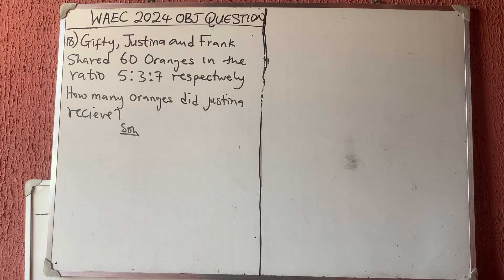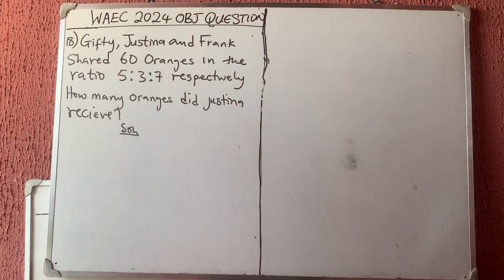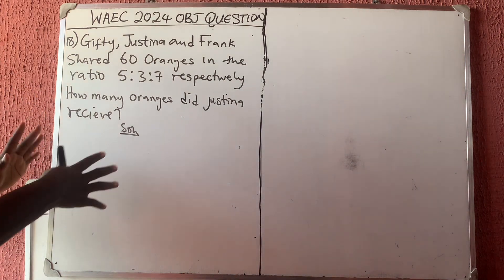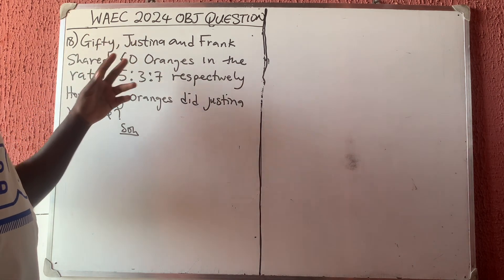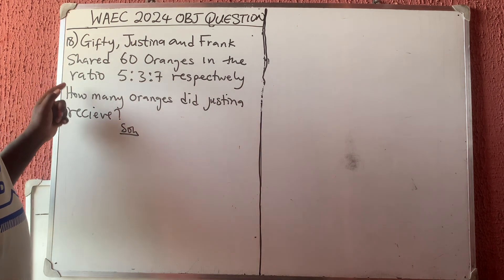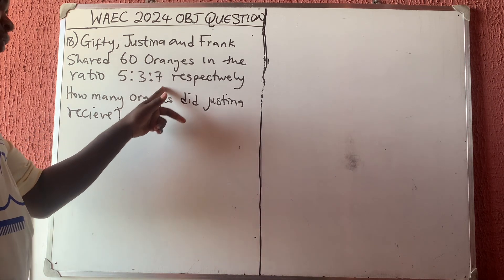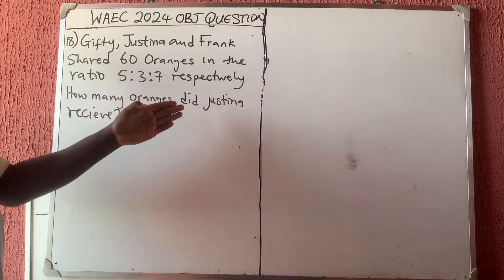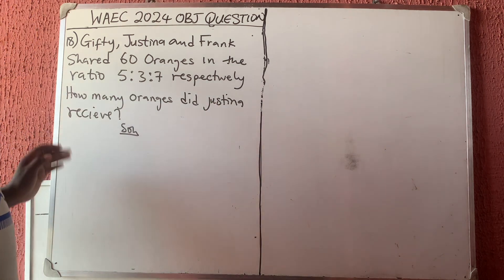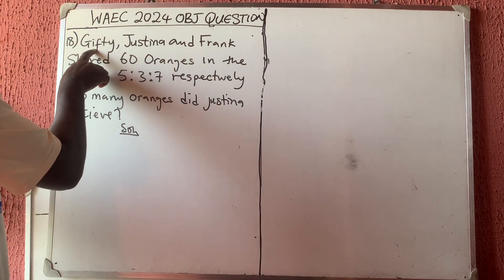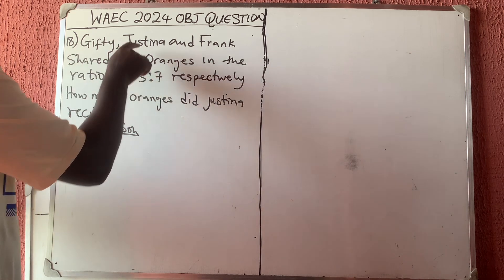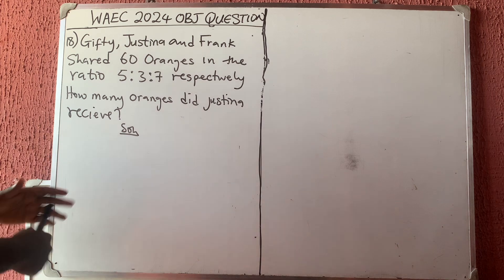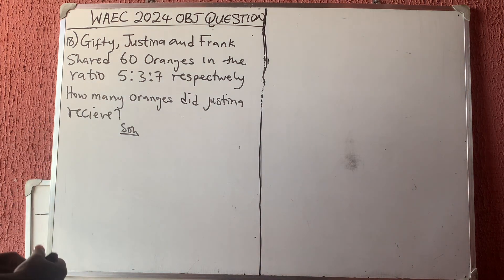Welcome back to my channel. Let us quickly solve this West African Examination Council problem. This is a very simple ratio problem. Giftie, Justina, and Frank shared 60 oranges in the ratio 5:3:7 respectively. The question asks how many oranges Justina received. Respectively means 5 goes to Giftie, 3 goes to Justina, and 7 goes to Frank — so Frank received the highest ratio.